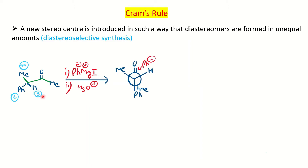If you write the Newman projection, you can notice that with respect to this chiral center, we write down the groups attached to it — taking the larger group (Ph) below the plane, the small group (hydrogen) on your right-hand side, and keeping the medium-sized group (Me) on your left-hand side. I have written S, M, L for small, medium, and large group. Then you can write down the carbonyl and Me along the line.